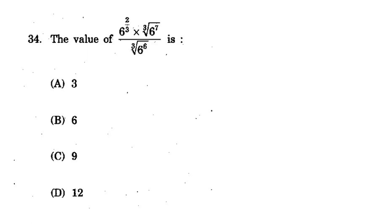Question 34: The value of a mathematical expression shown on screen. Taking the calculation step by step - multiplication, roots - the correct answer is option B - 6.